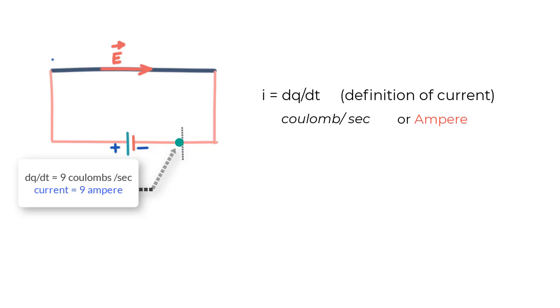the number of electrons that have passed through in one second here is 9 into 6.24 into 10 to the power 18, that is 56.16 quintillion electrons have passed this section in one second.